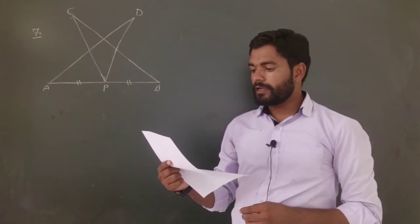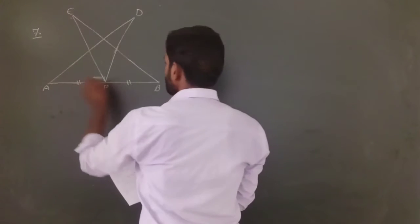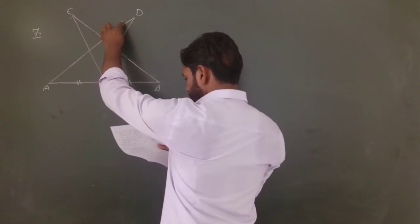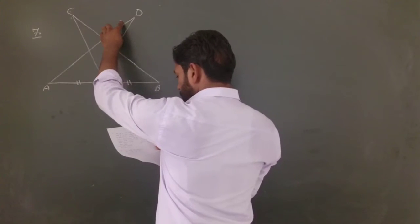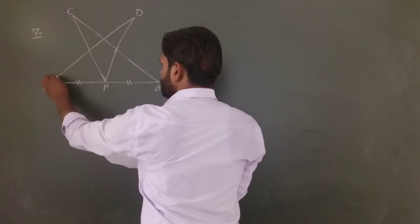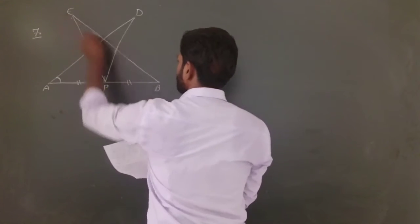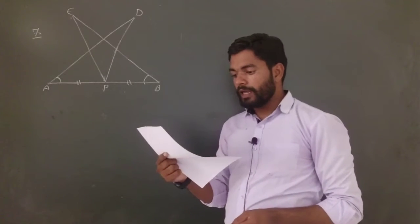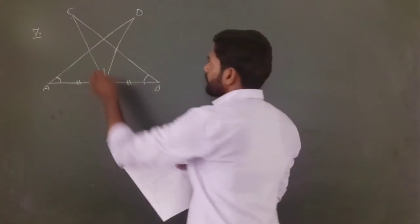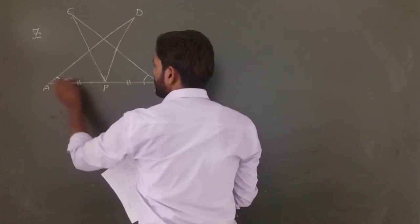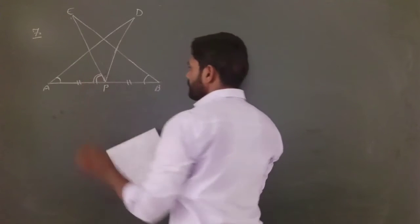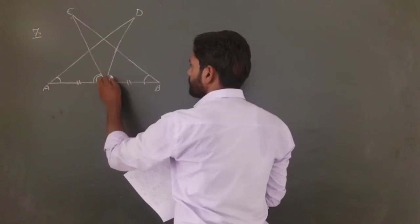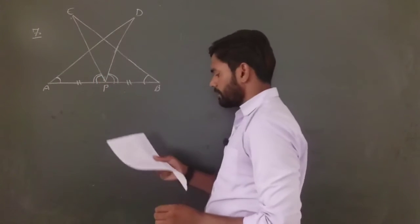Such that angle BAD is equal to angle ABE, and angle EPA is equal to angle DPB. These both angles are equal.